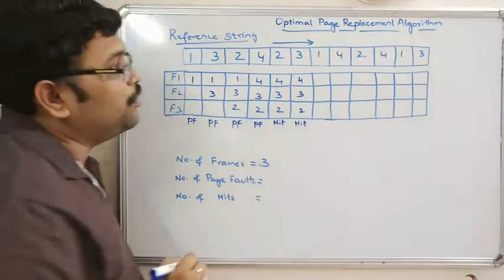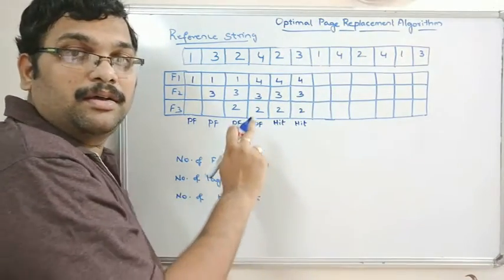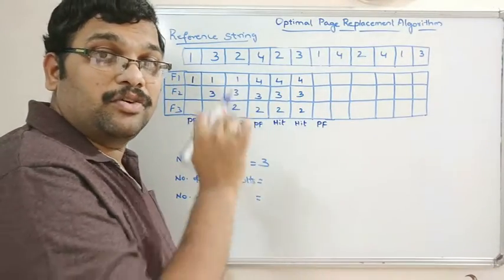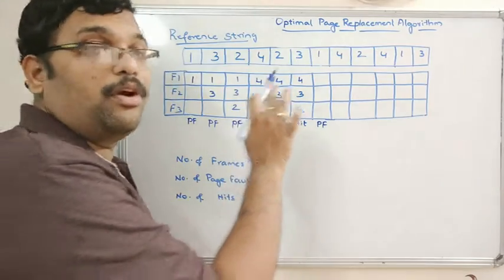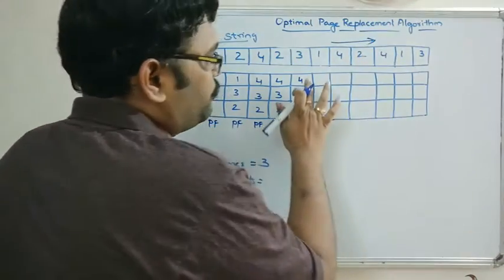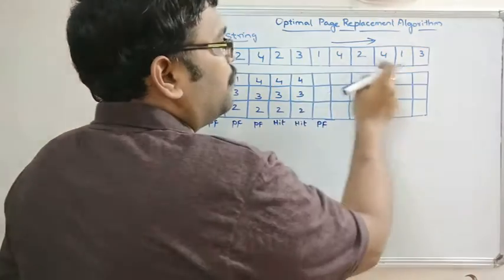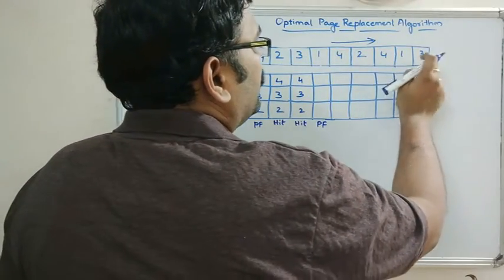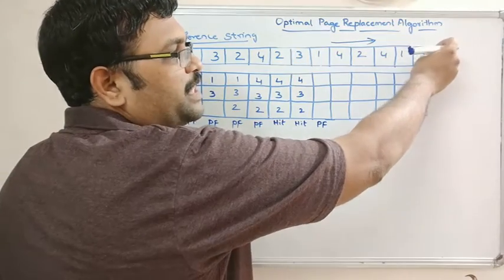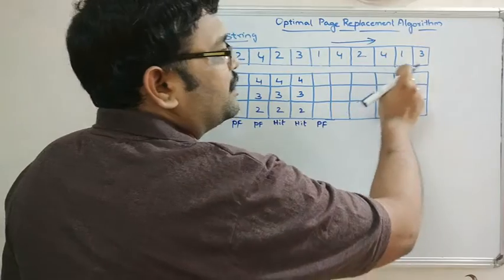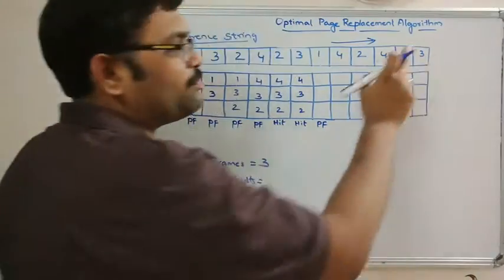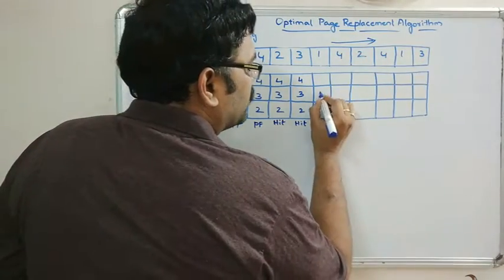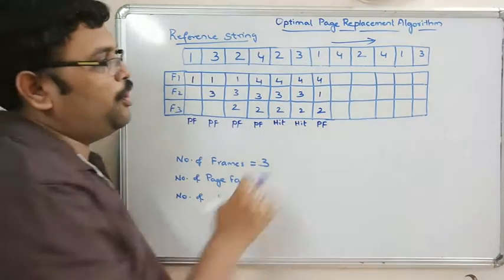Now page 1 is not available in main memory, so it's a page fault. We must replace one of the three pages currently in memory. Traveling to the right from this point: page 4 is needed, then page 2, then page 4 and page 1. Page 3 requires around four iterations before it's needed again — it has the longest waiting time. So page 3 is replaced with page 1, giving frames: 1, 2, and 4.